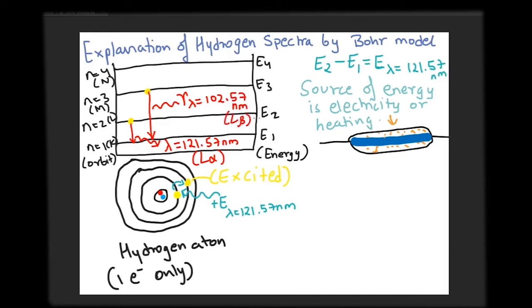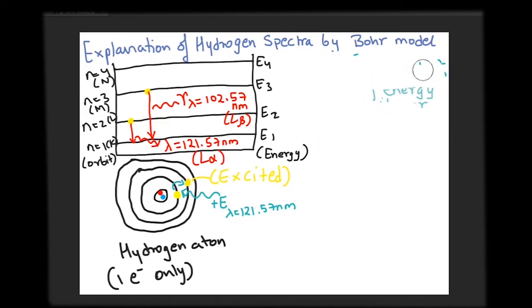to its low energy state. Like when an electron jumps from M orbit to the K orbit, it releases a radiation of exactly 102.57 nm.